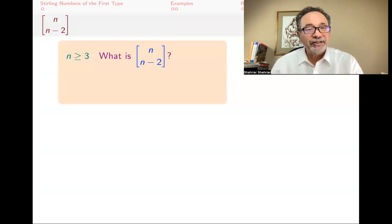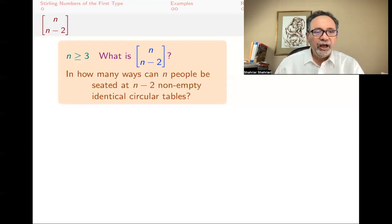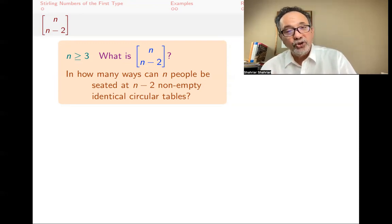So you have at least three people. And the question is that can we find a formula for [n, n-2]? And this might give us an idea that this is not going to be that easy to come up with a general formula for [n,k]. So what is the question? How many ways can n people be seated at n-2 non-empty identical circular tables? That's what we want to do. Or how many elements of S_n can be written as a product of n-2 disjoint cycles?